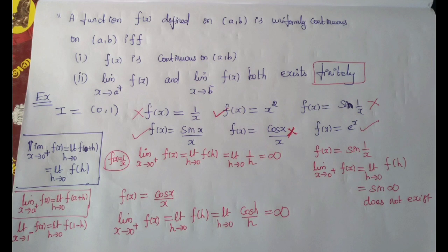If all these conditions are satisfied, R functions are uniformly continuous. For example, on the interval (0,1): 1/x is NOT uniformly continuous in open interval (0,1), while x² IS uniformly continuous in open interval (0,1). Tick mark means uniformly continuous, cross mark means not uniformly continuous.